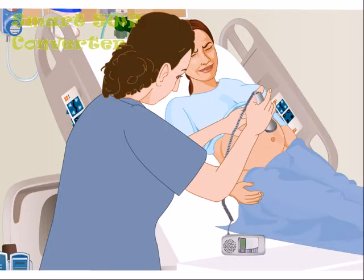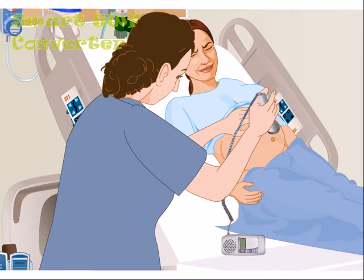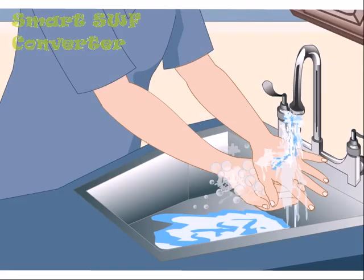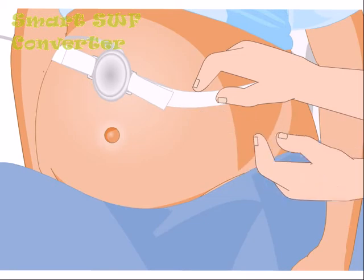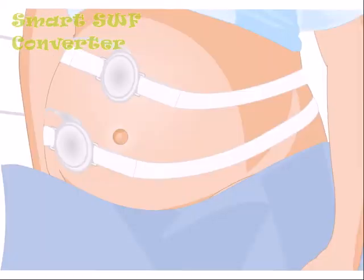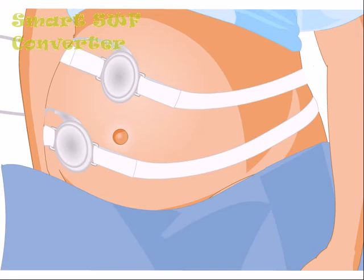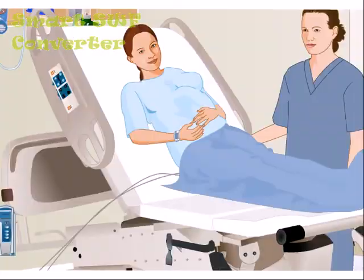Count the maternal radial pulse while listening to the fetal heart rate, then count the fetal heart rate for 30 to 60 seconds between contractions to identify the baseline rate. Palpate for uterine activity and auscultate the fetal heart rate during a contraction and for 30 seconds after the contraction ends, to identify any increases or decreases in fetal heart rate in response to the contraction. Repeat intermittent auscultation based on maternal-fetal risk factors.